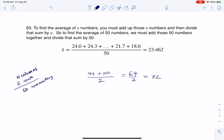But now if you have 50 folks, if I want to find the average of 50 numbers, you want to add those 50 numbers up and divide that sum by 50.